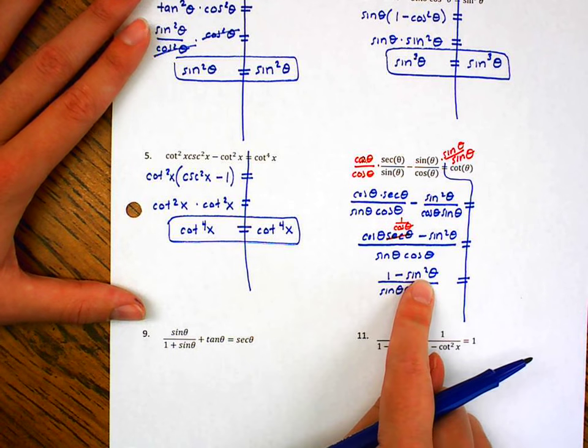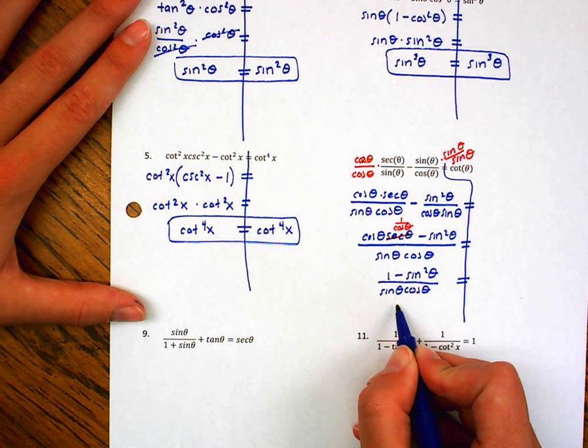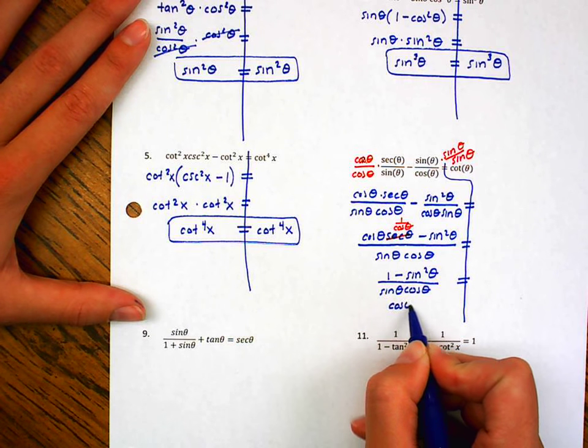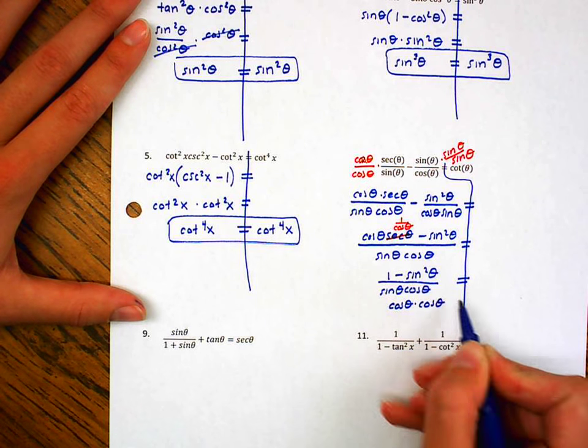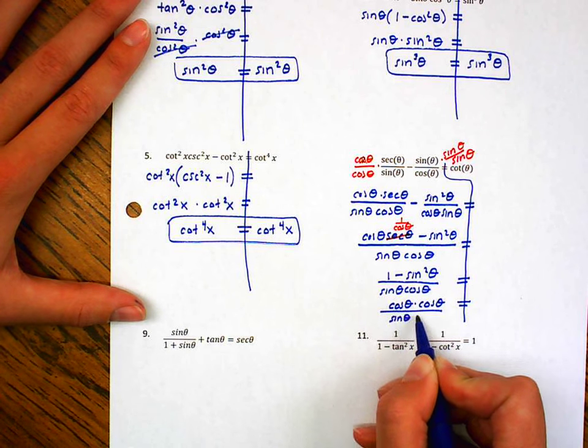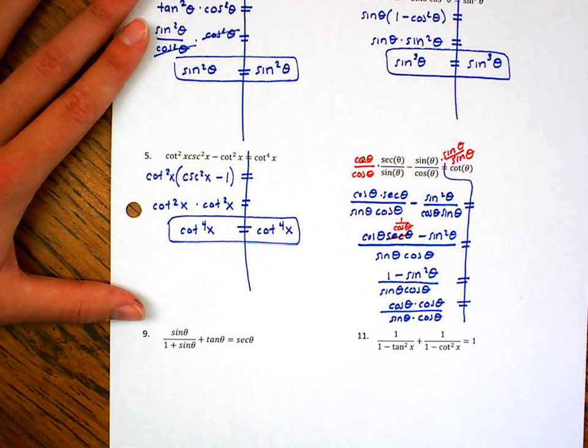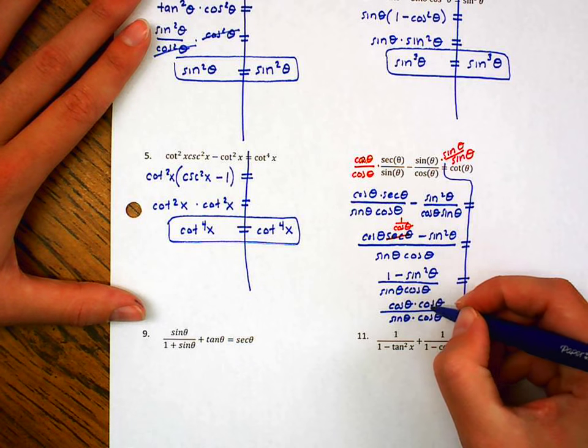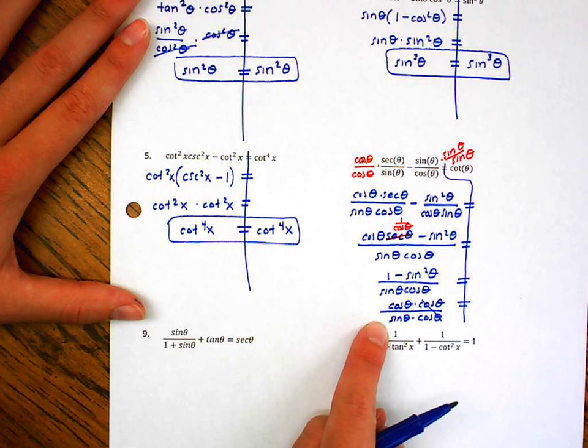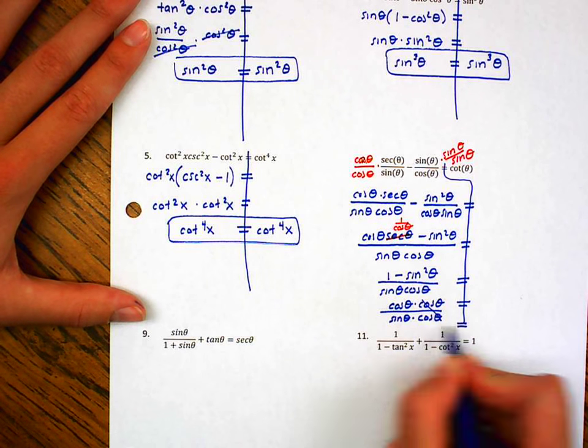Well, 1 minus sine squared theta is a Pythagorean identity. That's going to be cosine squared theta. And I'm going to purposely write it like this, because I'm running out of room. So cosine squared theta. Well, the cosine over cosine, that's going to go away. But I still have this cosine theta over sine theta. Well, that simplifies down to cotangent theta, which is exactly what I'm trying to get over here.